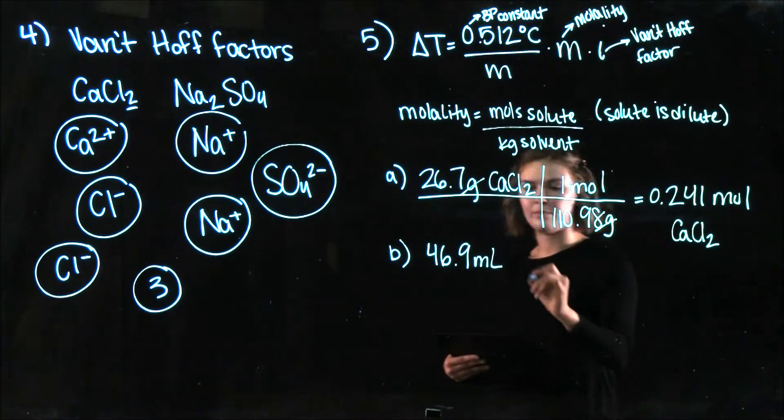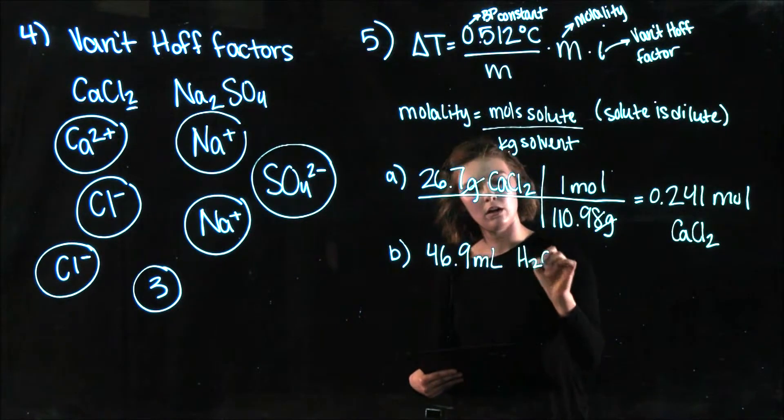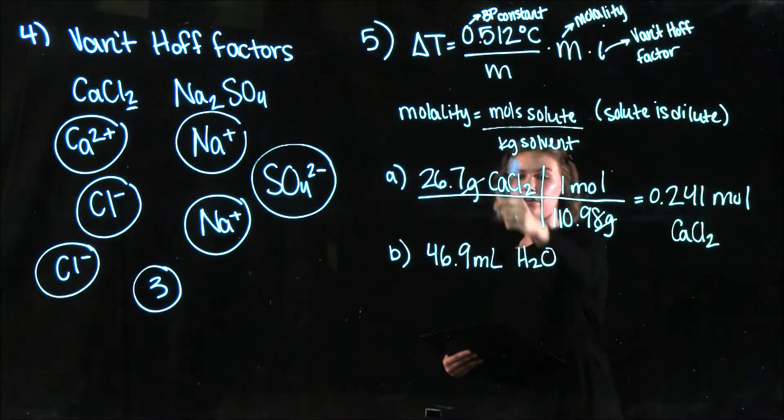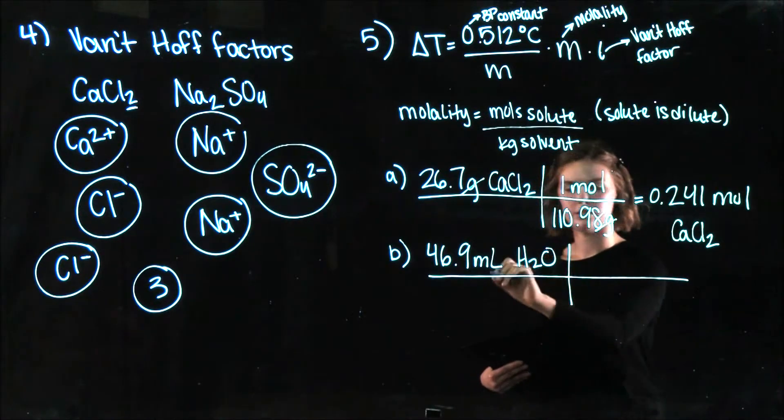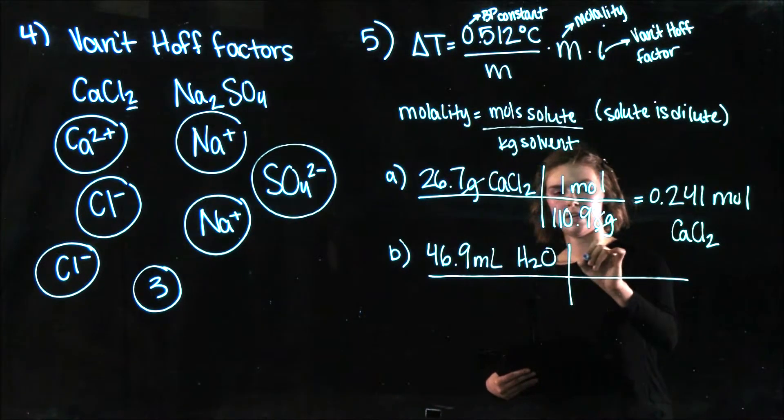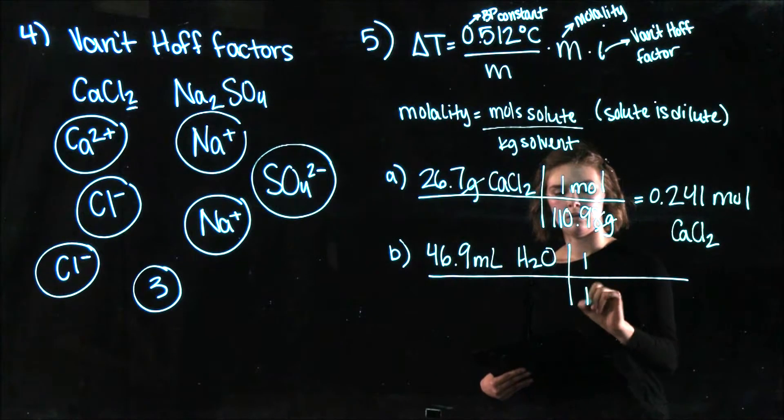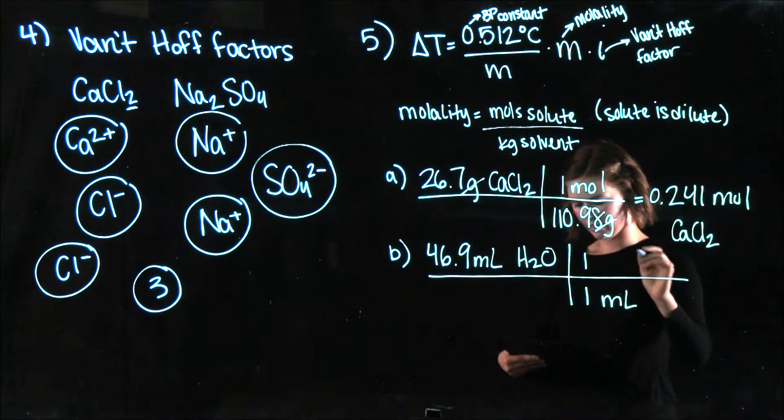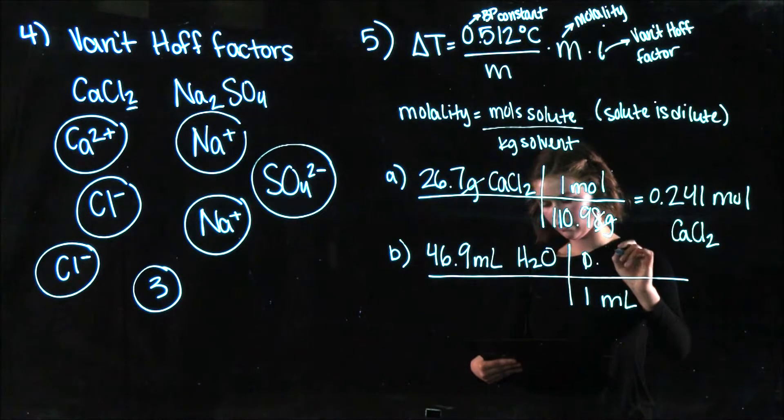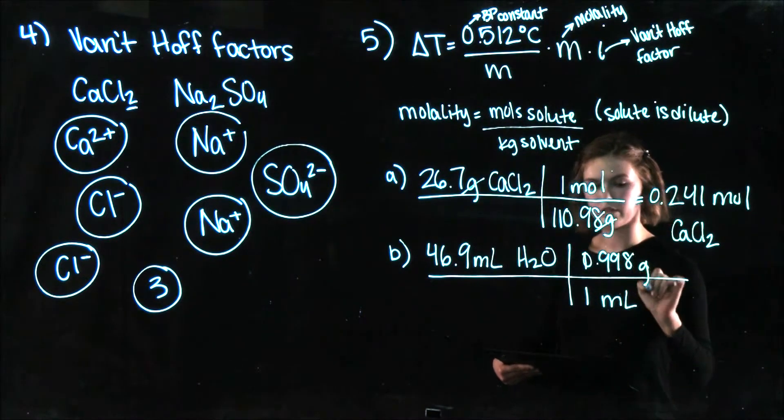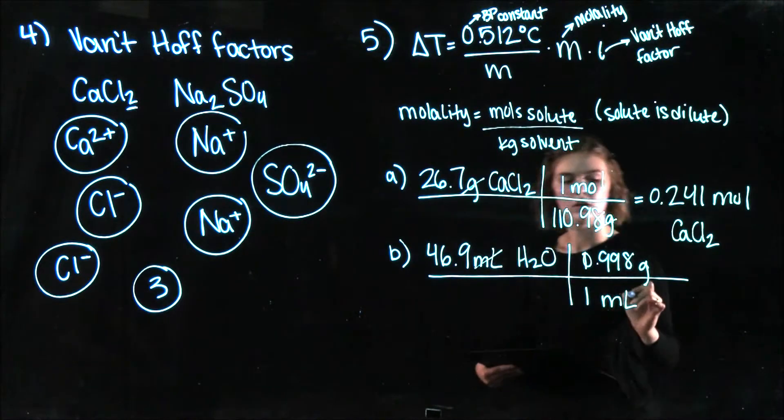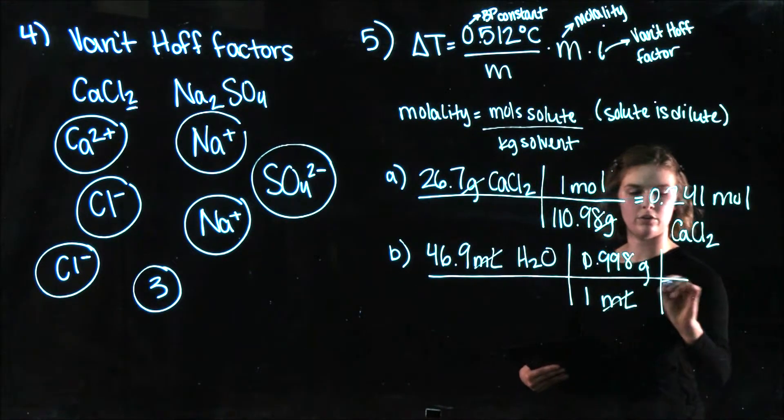Use the ones that you get from your lab, from your actual experiment. So let's say I had 46.9 milliliters of water and I'm trying to find kilograms. So my first step, I'm going to convert to grams. So we'll say for every mil of water I'm going to have 0.998 grams.